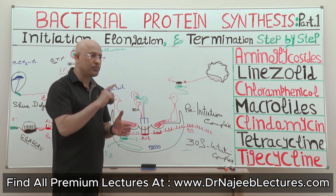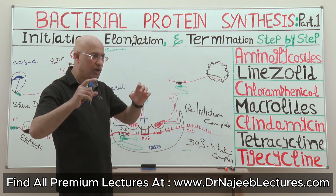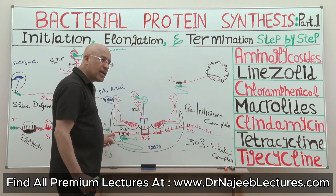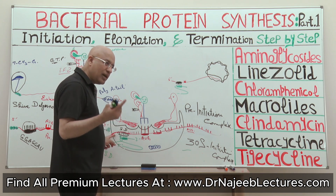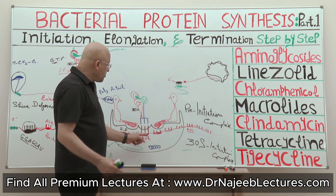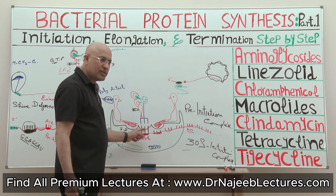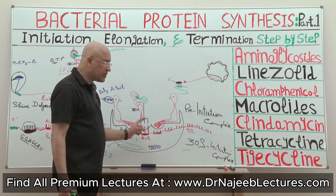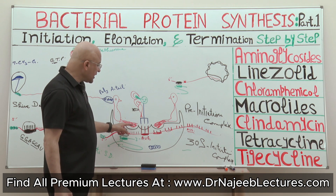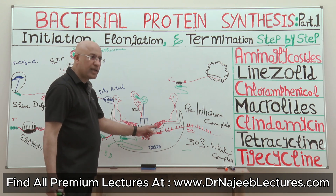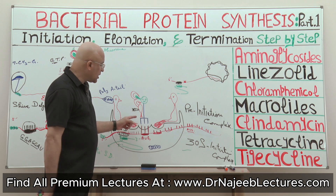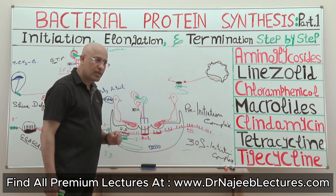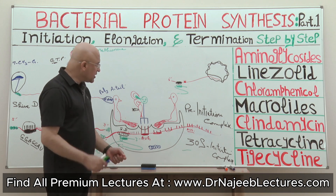So how many functions do we have so far? Number 1: prevention of the premature arrival of the 50S subunit. Number 2: helping in binding and orienting the messenger RNA properly on the 30S subunit. Number 3: placing the AUG start codon properly at the P site. Number 4: blocking the E site and A site so that no undue binding occurs until the initiator transfer RNA with formyl-methionine binds with the start codon. And number 5: proofreading.